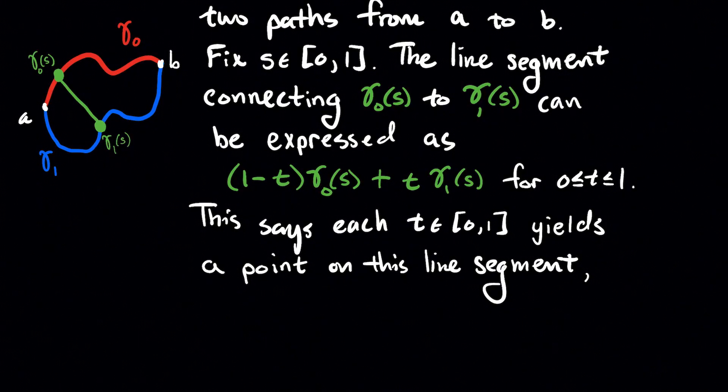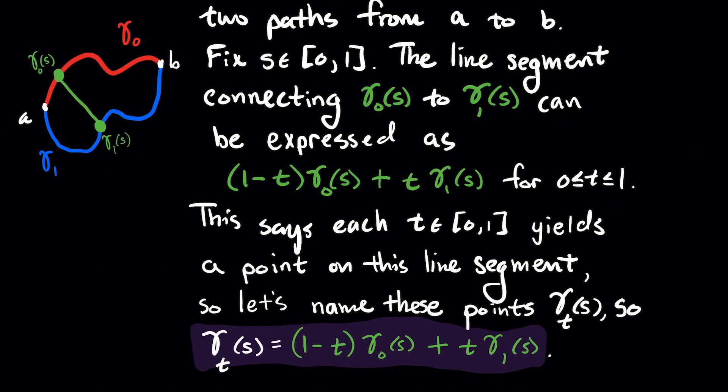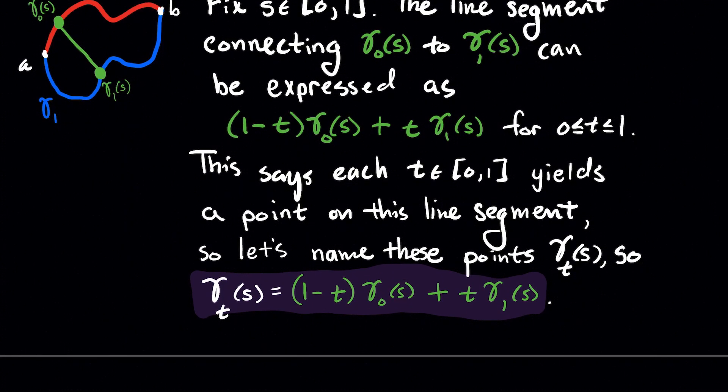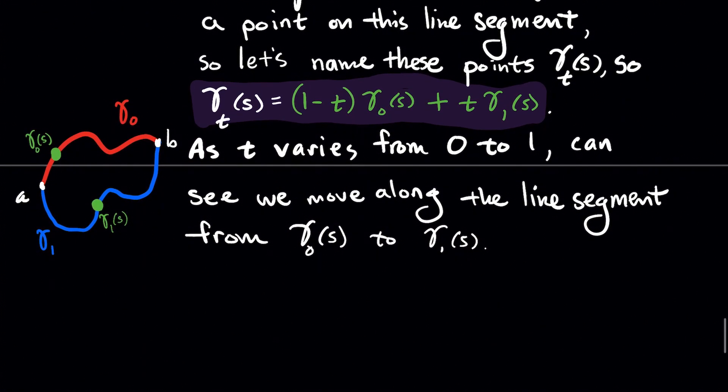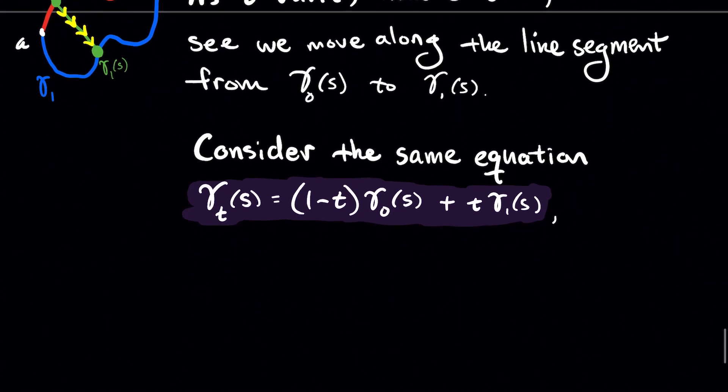Now this says that each t between zero and one yields a point on this line segment. And so let's name these points. We're going to name them gamma sub t of s. So to put this together, we're saying that gamma sub t of s is equal to our line segment here. That particular t picks out a point on this line segment. And now what you should think about is as t varies from zero to one, we see that we're moving along this line segment from gamma naught, my red curve, to gamma one of s.